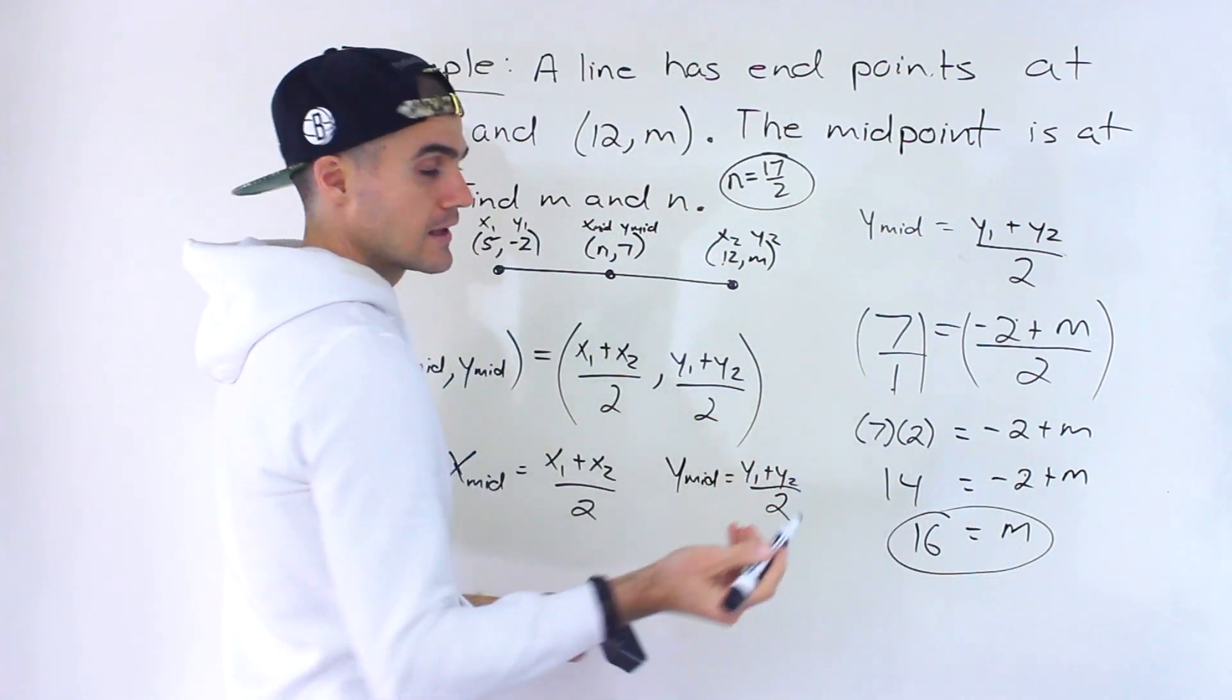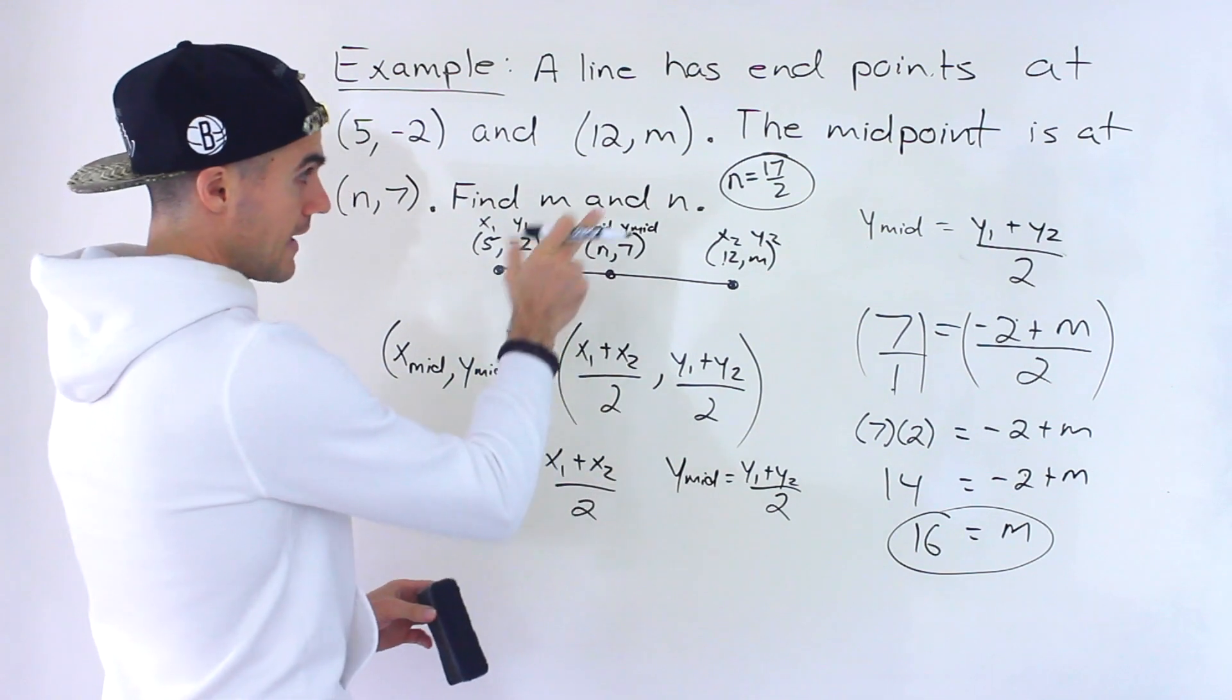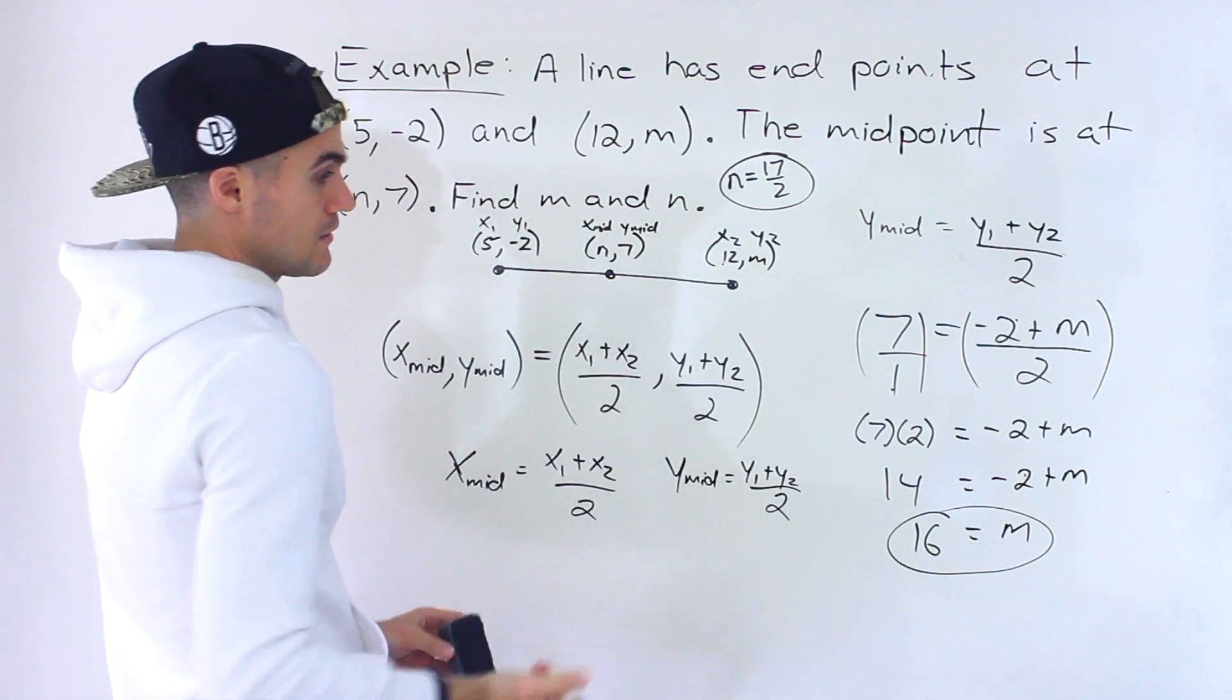All right, so that is the other answer. So the n is 17 over 2. The m is 16.